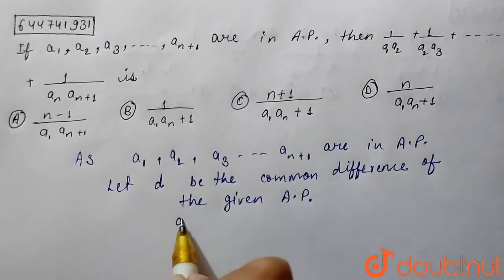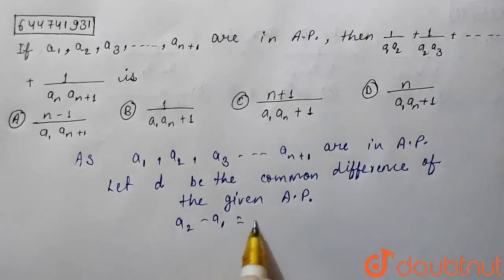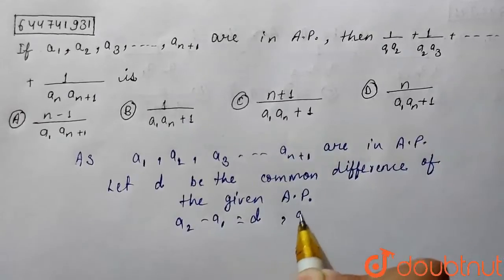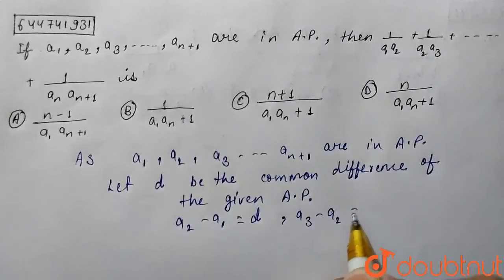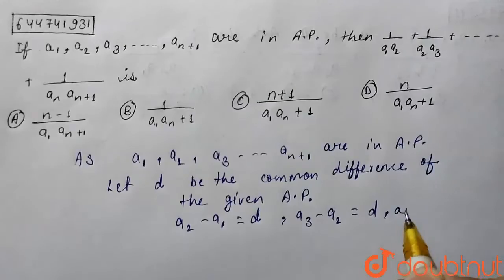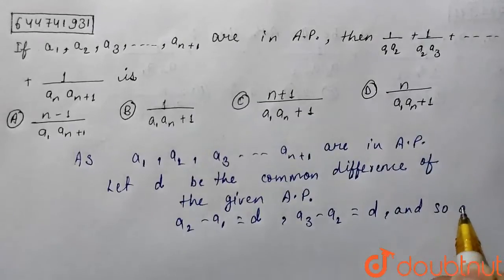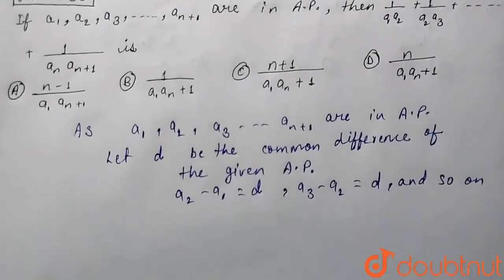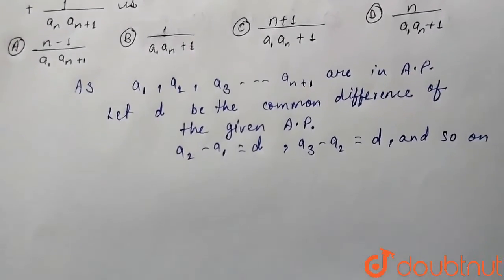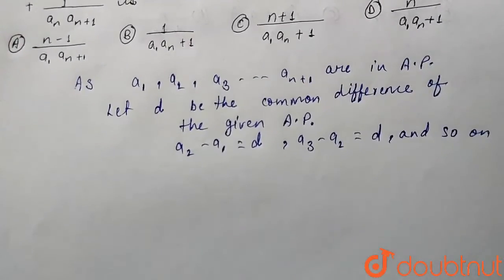So we can say that a2 minus a1 is equal to d, a3 minus a2 is equal to d and so on. As they are in AP, the difference between the consecutive terms is d.